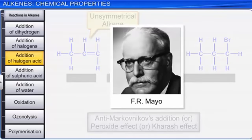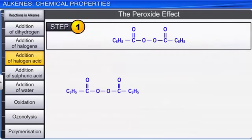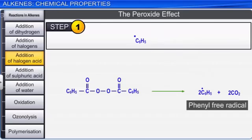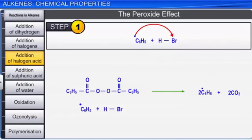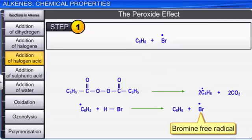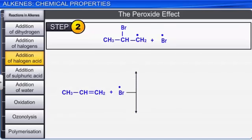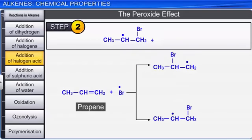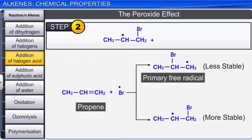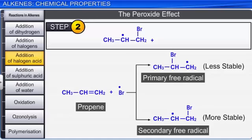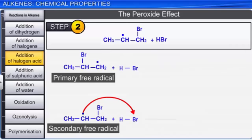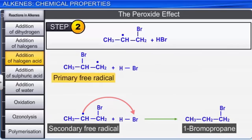The peroxide effect takes place via a free radical mechanism. Initially, benzoyl peroxide undergoes homolysis to form benzene free radicals, which attack hydrogen bromide, resulting in the generation of a bromine free radical. This bromine free radical further propagates the reaction by attacking the double bond in propene, causing homolytic cleavage to produce less stable primary and more stable secondary free radicals. The secondary free radical attacks hydrogen bromide to form 1-bromopropane, and the primary free radical attacks hydrogen bromide to form 2-bromopropane. Thus, 1-bromopropane is formed as the major product in the peroxide effect.